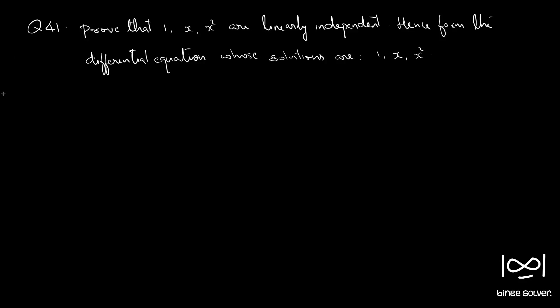Question 41: Prove that 1, x, x² are linearly independent, hence form the differential equation whose solutions are 1, x, x². First, we need to check whether the given three functions are linearly independent. Say y1(x) = 1, y2(x) = x, y3(x) = x².